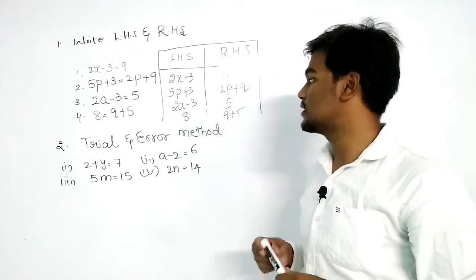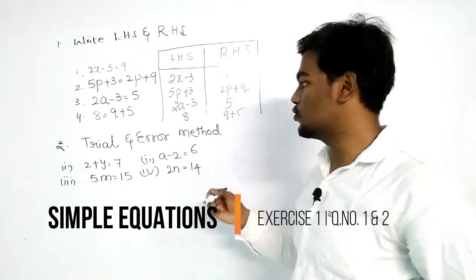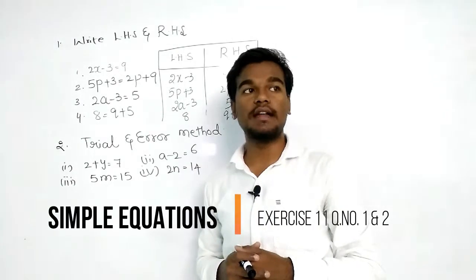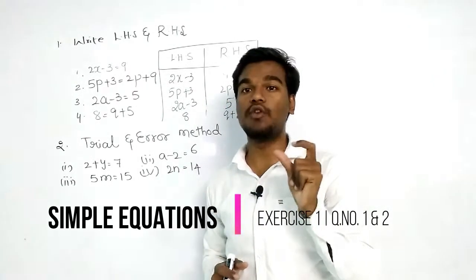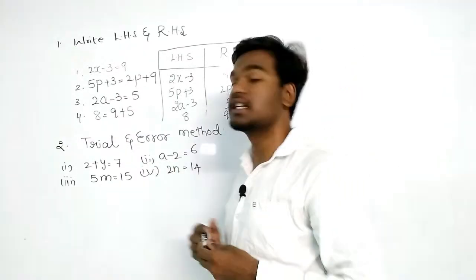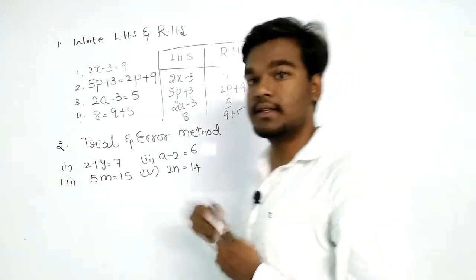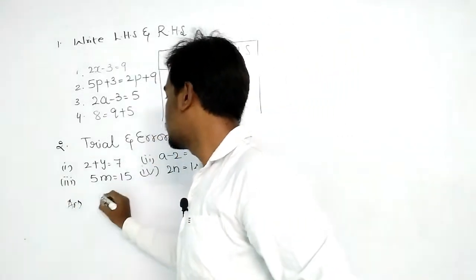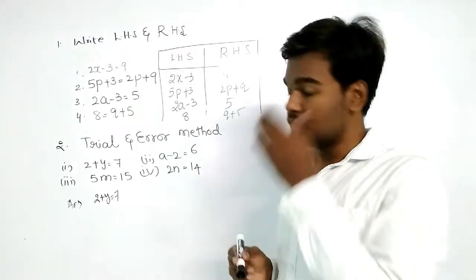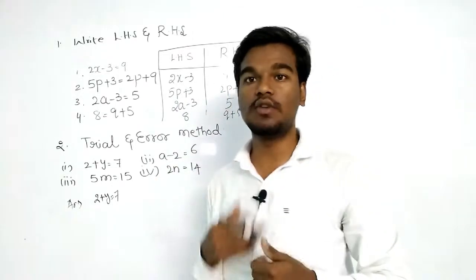Now we will go to the next topic: the trial and error method. The first equation is 2 plus y equal to 7. Before applying trial and error, look at the equation and think about which value will be the most suitable to get the right-hand side value, which is 7. In trial and error, we can take any positive or negative values, or even 0.